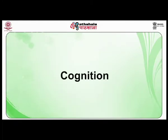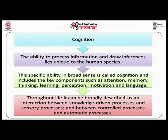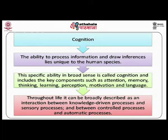So let's start with what is cognition. Cognition is the ability to process information and draw inferences, which is unique to the human species. This specific ability in a broad sense is called cognition and includes key components such as attention, memory, thinking, learning, perception, motivation, and language.